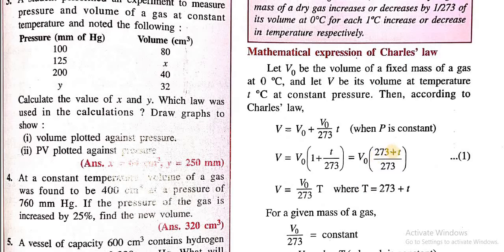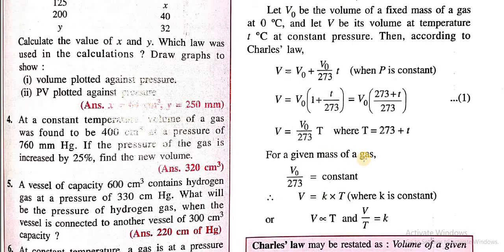So this expression can be replaced by T. So V equals V₀/273 times T. Now, for a given mass of a gas, this V₀/273 is a constant, because 273 is a constant and initial volume will also be constant.